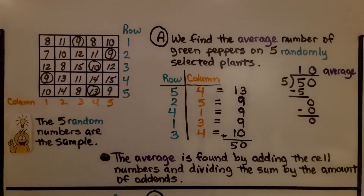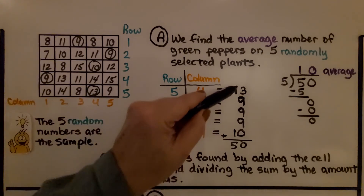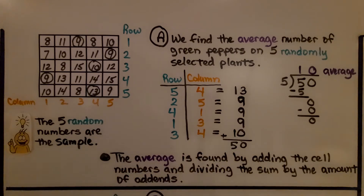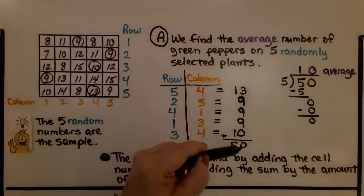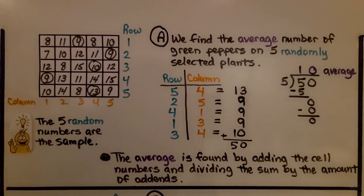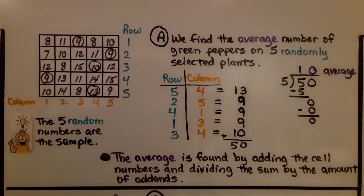Now we find the average number of green peppers on the 5 randomly selected plants. These are my 5 randomly selected plants. I take these numbers, add them, and get 50. The average is found by adding the cell numbers and dividing the sum by the number of addends. So I added them up and got 50, and there are 5 addends, so I divide 50 by 5 and got 10 for the average. The 5 random numbers are the sample of the whole population. This was Part A, and the average was 10.